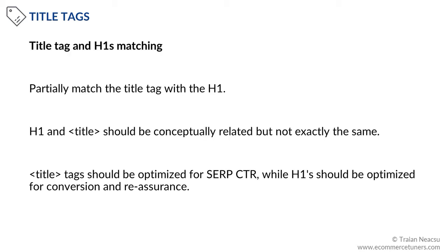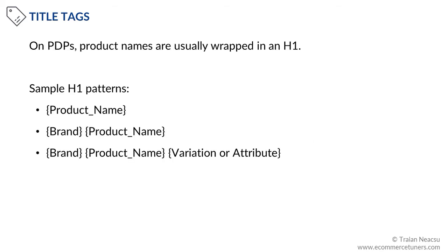Consider the following suggestions for improving the effectiveness of your titles. Title tag and H1 matching: one way to reinforce the relevance of a product page is to partially match the title tag with the H1. When doing this, both elements should contain the product name. This partial match is a good idea because H1 and title should be conceptually related but not the same. Optimize your title tags for better SERP CTR and the H1 for conversion and reassurance. On PDPs, the product name is usually wrapped in an H1 and can follow a standard naming pattern.